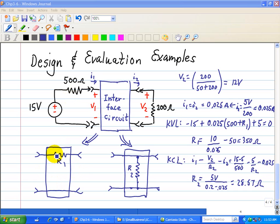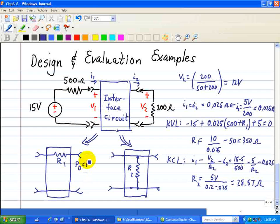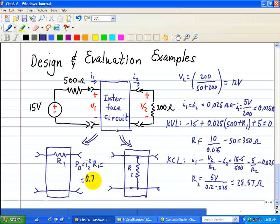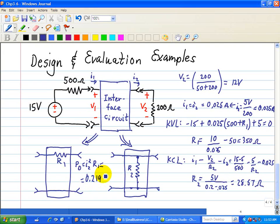So let's look at the power dissipation in the series case for R1, in which we have PD equals I2 squared times R1. We know that I2 is 0.025 and that R1 is 350, therefore that yields power dissipation of 0.219 watts.